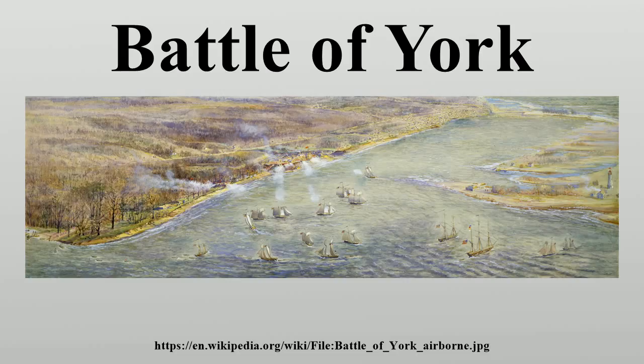After capturing York, they would then attack Fort George. Although York was the provincial capital of Upper Canada, it was far less important than Kingston as a military objective. Armstrong, by now back in Washington, nevertheless acquiesced in this change of plan as Dearborn might well have better local information. Historians such as John R. Elting have pointed out that this effectively reversed Armstrong's original strategy. Also, by committing the bulk of the American forces at the western end of Lake Ontario, it would leave Sackett's Harbour vulnerable to an attack by British reinforcements arriving from Lower Canada.